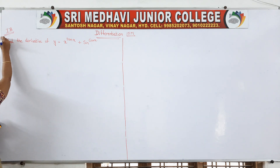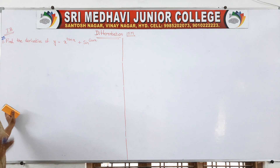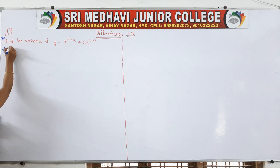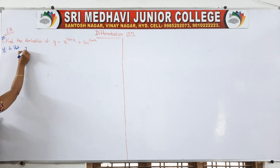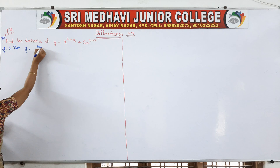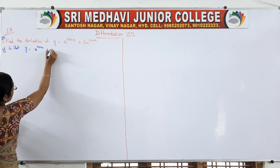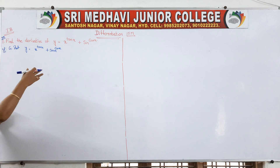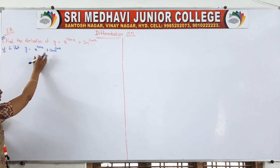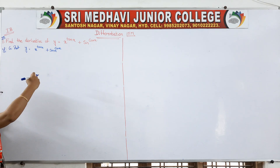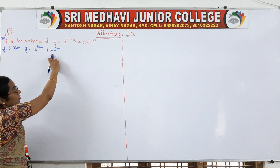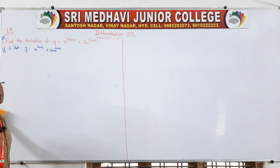Now take this question — a very, very important question. We will solve this problem using the logarithmic method. The given problem is: y is equal to x to the power of tan x, plus sin x to the power of cos x. If you observe, y is given in a very complex form — it is the sum of two terms, but each term has a variable base and the power is also in terms of x. In such cases, we have to go for the logarithmic method.